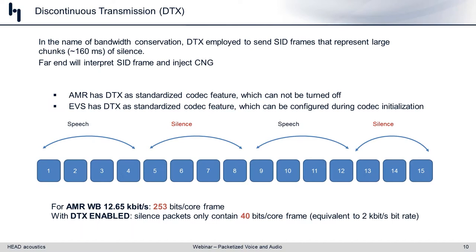A note about DTX: in AMR, it is an included codec feature and is enabled by default. For EVS (Enhanced Voice Services) — a mobile phone codec supporting super wideband, fullband, narrowband, wideband, binaural/stereo channels, and even music — DTX is also a standardized codec feature, but it must be configured during the initial codec and call setup. These are minor differences you need to be aware of when testing either AMR or EVS.